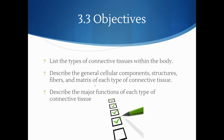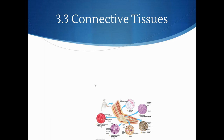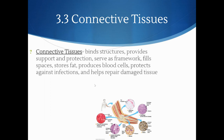Section 3.3 objectives: list the types of connective tissues within the body, describe the general cellular components, structures, fibers, and matrix of each type, and describe the major functions of each type of connective tissue. Connective tissues bind structures, provide support and protection, serve as a framework, fill space, store fat, produce blood cells, protect against infections, and help repair damaged cells — it plays a very important role in many different places.